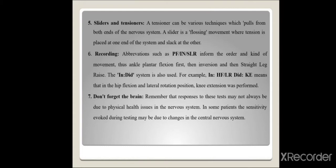Butler also described how to record neurodynamic tests using abbreviations. For example, 'PF, INV, SLR' means ankle plantar flexion and inversion followed by straight leg raise. Another notation such as 'HF/LR, DID, KE' means hip flexion and lateral rotation followed by knee extension. The seventh concept reminds us not to forget the brain — any increase in neural tissue symptoms may not always be localized but can be centralized.